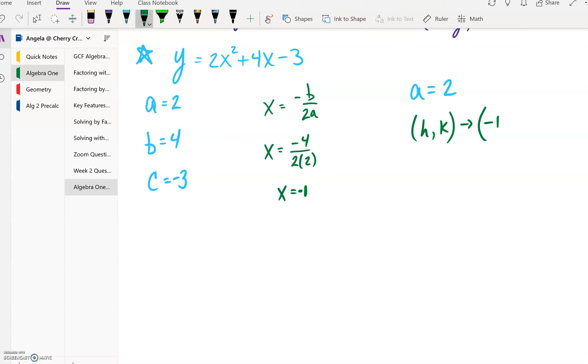Now to find the y value, we have to take this -1 and we have to plug it back into our original equation. So here we go: y = 2(-1)² + 4(-1) - 3.